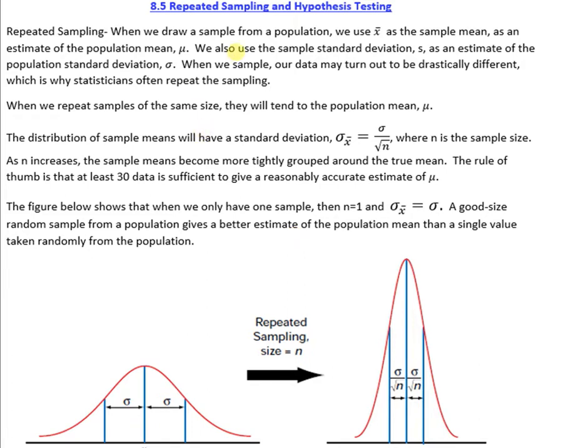We're going to focus on repeated sampling. Repeated sampling is when you draw a sample from a population. And for a sample, we already know this, but for the mean we use X bar, whereas for the population we use mu.